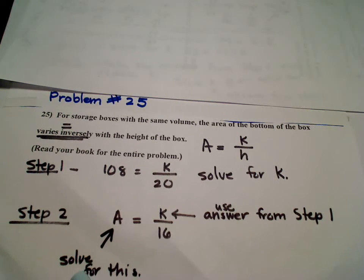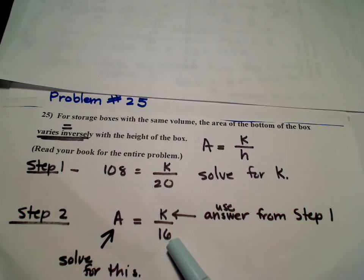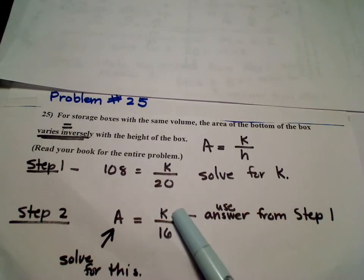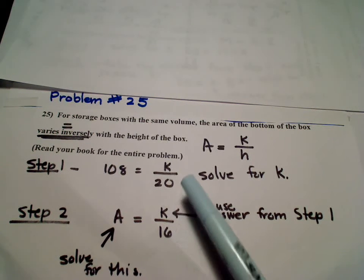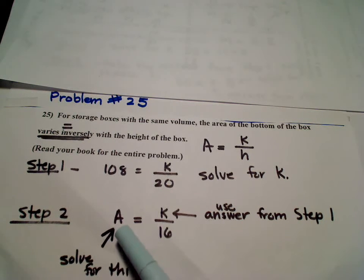This time they're saying, well suppose the height happened to be 16. So what's going to happen? I know what the constant is, which is K, because that would come from step number 1. So by solving step number 1, I'd plug it in these two and I actually then would end up with the area.